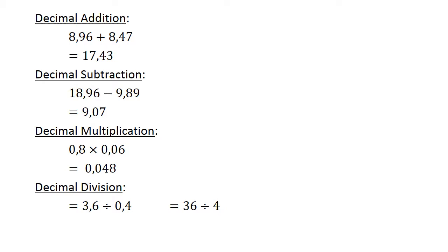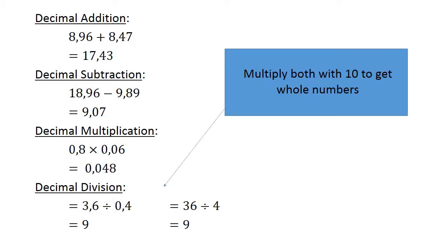3.6 divided by 0.4. And we have 36 divided by 4 equals 9.